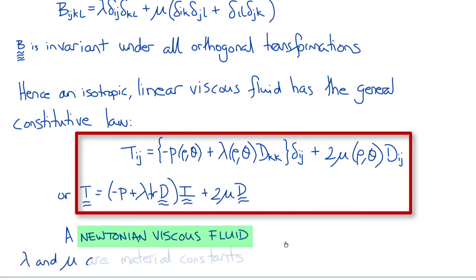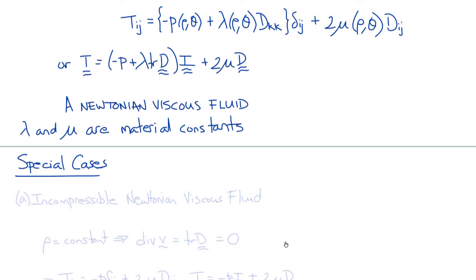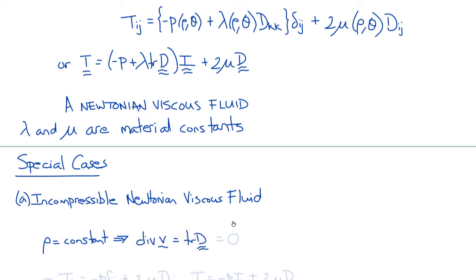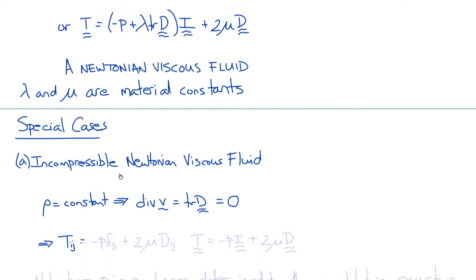Now there are some special cases. One special case is an incompressible Newtonian viscous fluid. In this case, the density rho is constant, which gives us that the divergence of the velocity vector v — or the trace of D — is equal to zero. Therefore, the constitutive equation simplifies to T_ij equals minus p delta_ij plus 2 mu D_ij, or in direct notation, T equals minus p I plus 2 mu D.